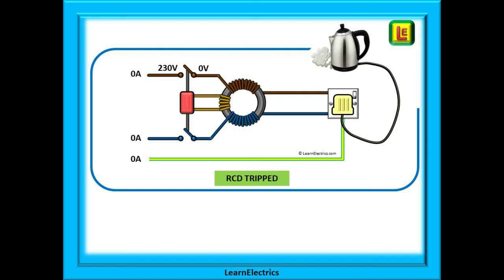We should investigate the problem, carry out any remedial actions — in this case replace the kettle — and restore the supply. For an RCD it does not matter what amount of current is being used; it could just as easily have been a 1 kW kettle at 3 amps. As soon as there is a difference of 30 milliamps or more the RCD will activate.